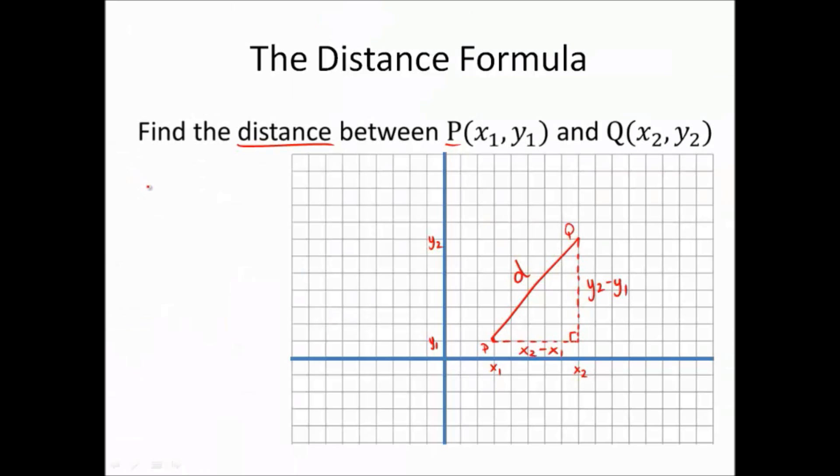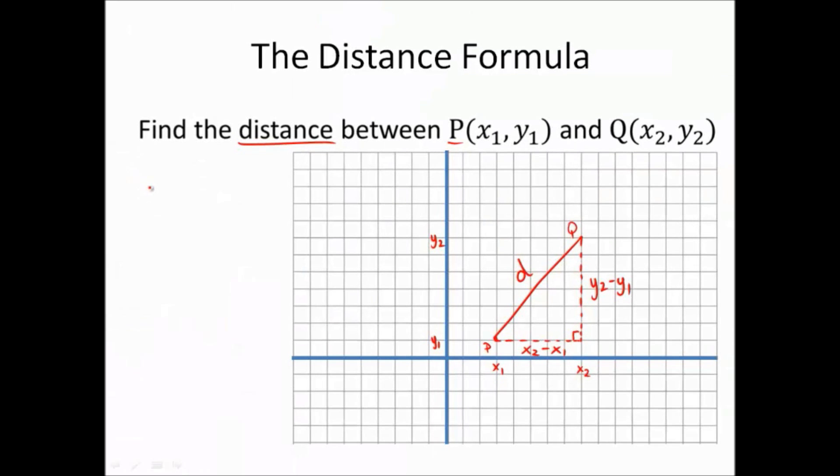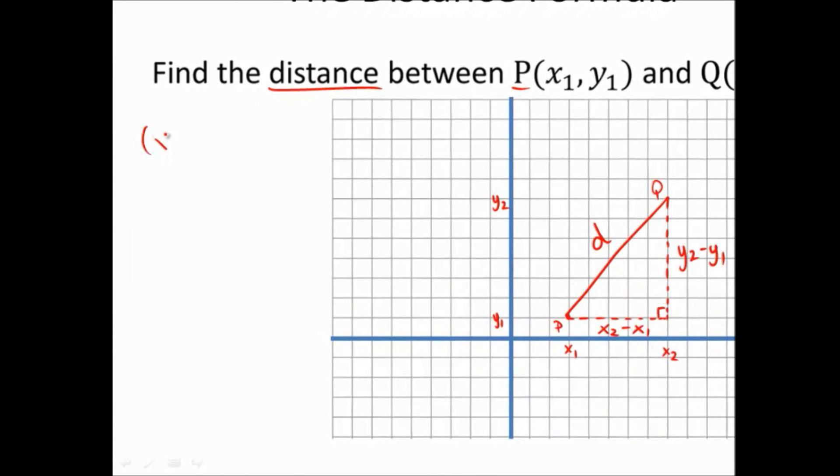Let's go ahead and use the Pythagorean theorem. We know that the two shorter sides squared and added together should equal the diagonal squared.